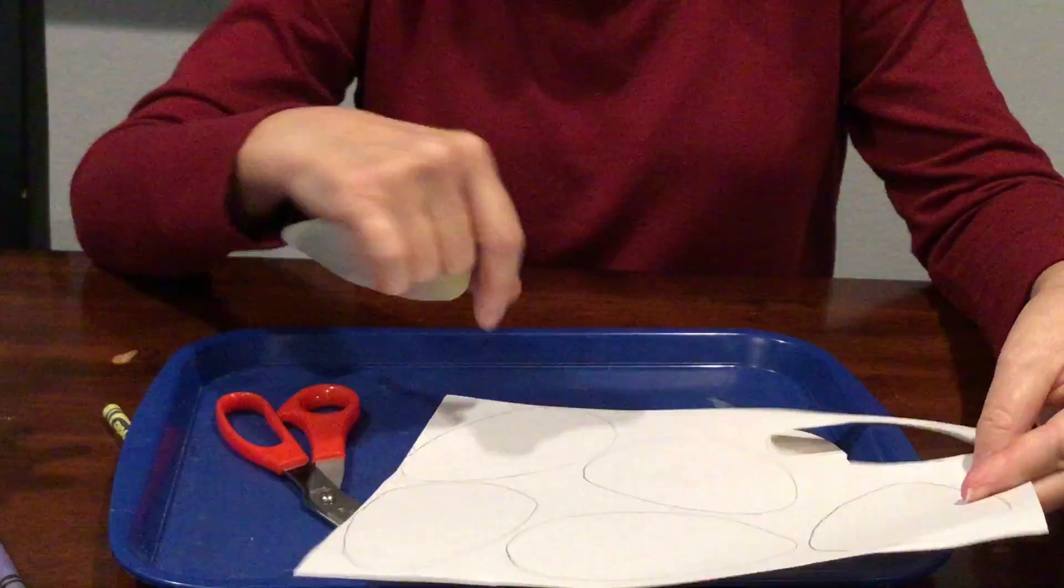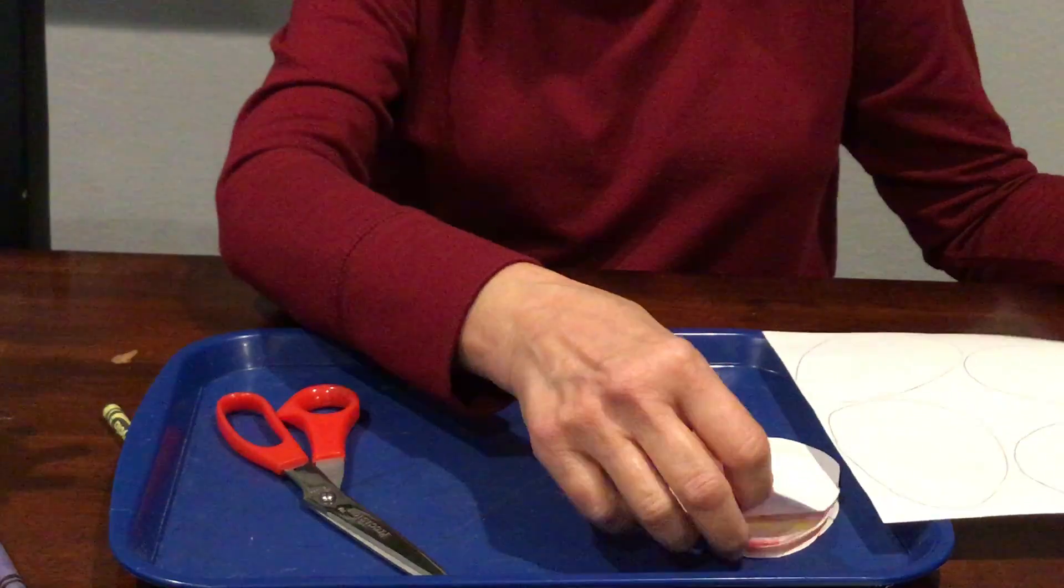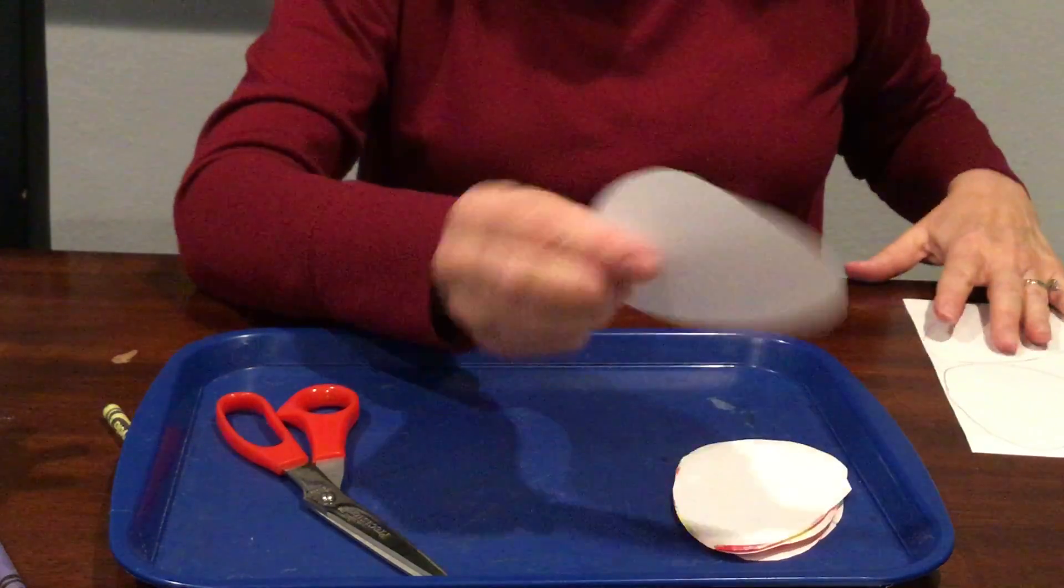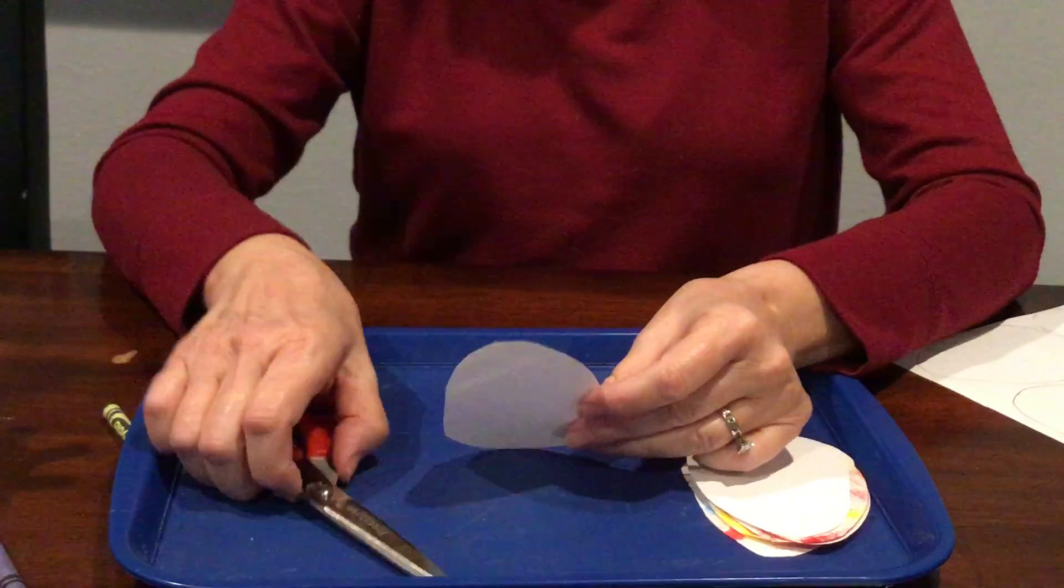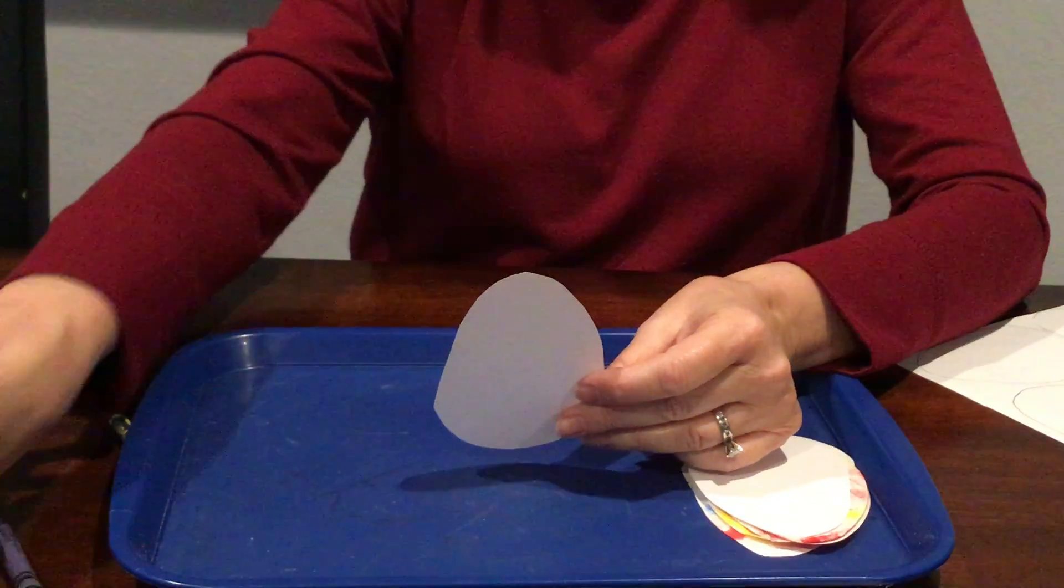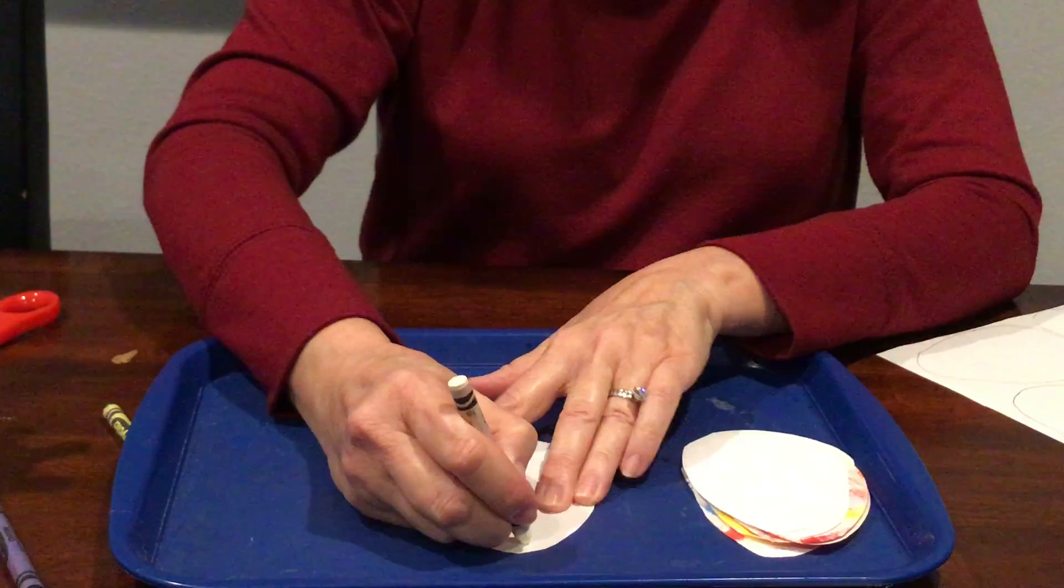Another way you can do it is just to cut out the white eggs first and then you get your crayons. There's a couple of different things you can do. You can use markers or crayons. I'm gonna start with the white crayon and I'm just gonna do zigzags.